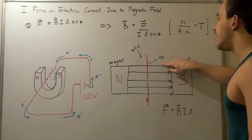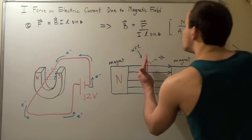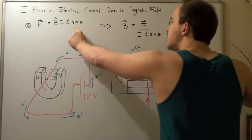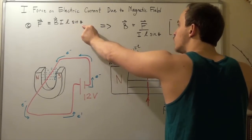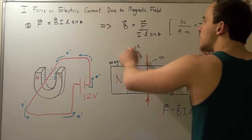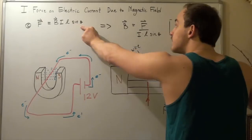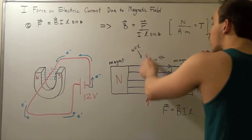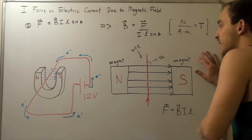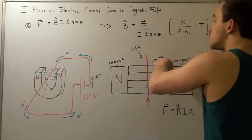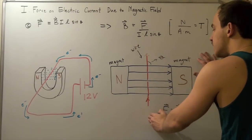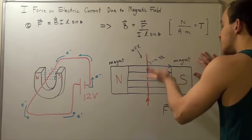Notice what happens as the angle becomes smaller than 90°. As the wire rotates and the angle decreases, sin(θ) becomes less than one, so the force decreases. When the angle reaches zero — when the wire is directly parallel to the magnetic field lines — sin(0°) = 0, so the force is zero and the wire feels no force at all. Conversely, when the angle is 90°, the force is at its maximum for the given magnetic field strength.